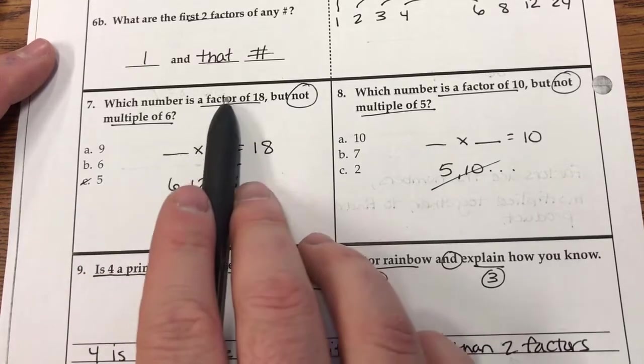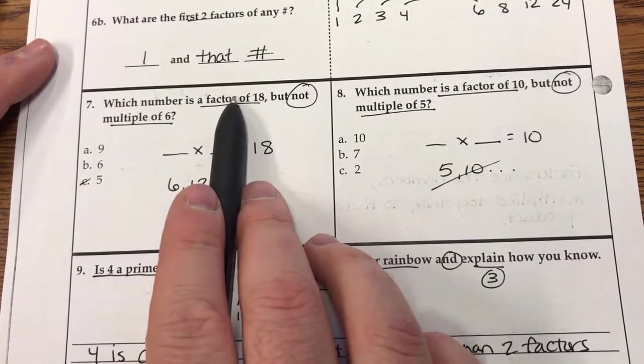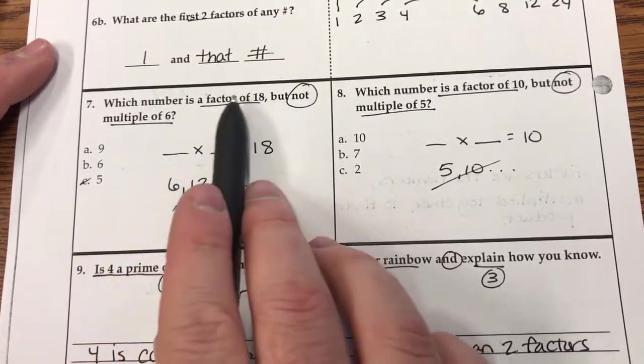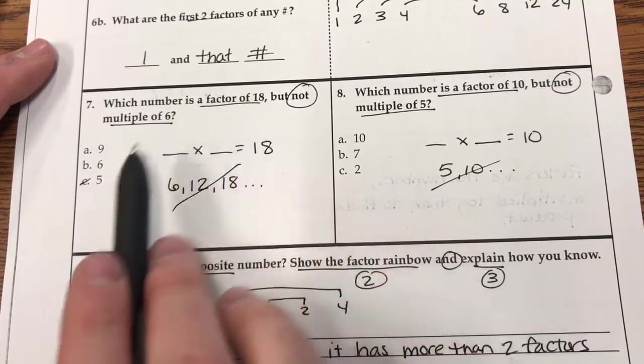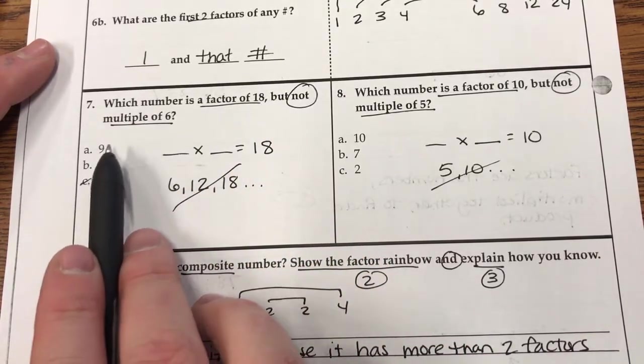So right away I know 5 isn't a factor of 18. Always start with this one. Ignore the multiples part. Start with this one. So factors of 18. Well, I know that's not. So it's down to these two.